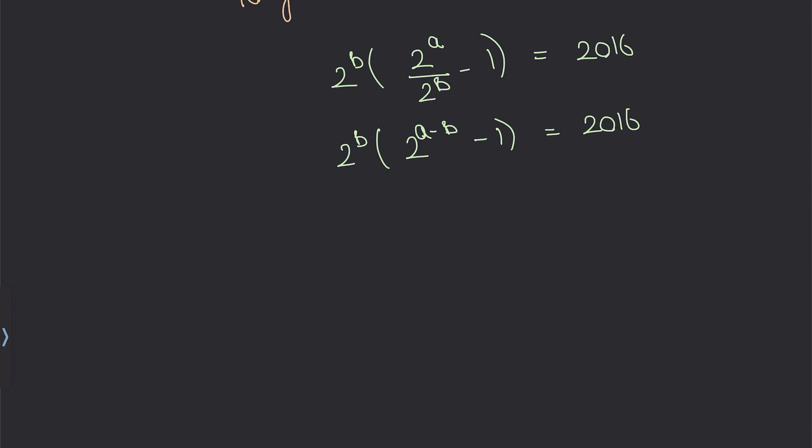Now notice one thing: this number is an odd number, because 2^(a-b) is an even number and 1 is an odd number. So even minus odd is odd.